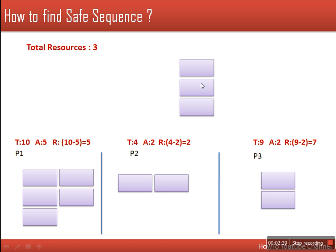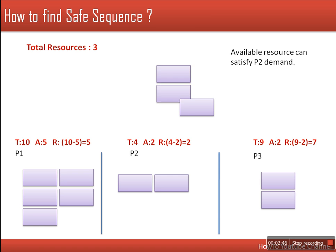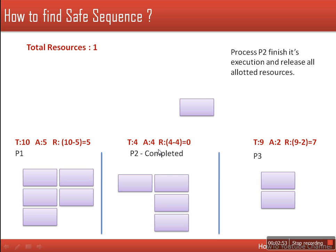The available resources can satisfy only process P2's requirement. So out of these 3, 2 will be allocated to P2. Now P2 will be having all of its resources — total need 4, and 4 are now allocated. This process has all its required resources, it will complete its execution, and once done it will release all the resources.